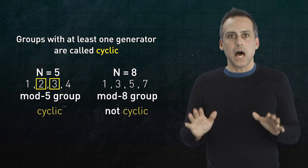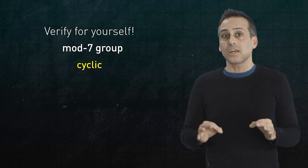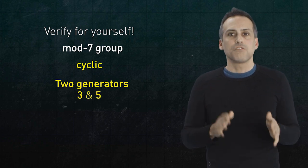Just to make sure you're following, because that was a lot, go ahead and verify for yourself that the mod 7 group is cyclic, and that it has two generators, 3 and 5.